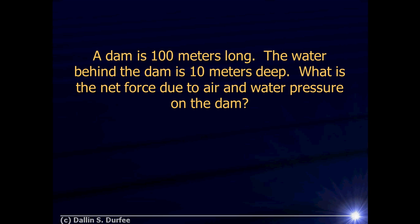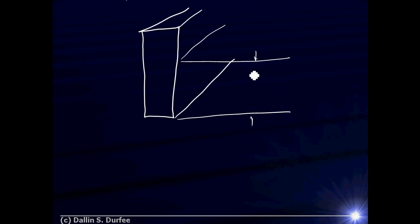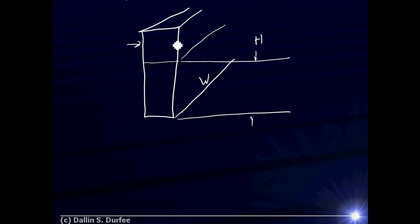Here is our final problem. A dam is 100 meters long; the water behind the dam is 10 meters deep. What is the net force due to air and water pressure on the dam? I've got the cross section of the dam going 100 meters wide — let's call it W. The water fills to a height of 10 meters — let's call it H. For the part of the dam above the water, both sides are in air so those forces cancel. We only need to worry about the bottom portion.